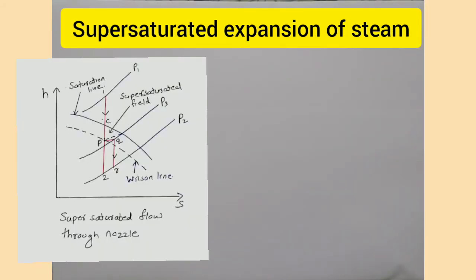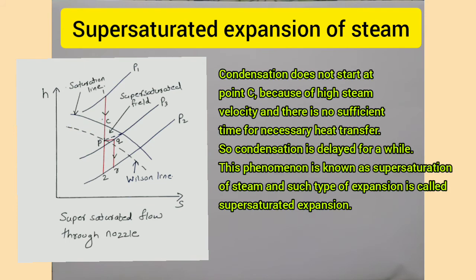Next is supersaturation. Consider isentropic expansion of a superheated steam in a convergent-divergent nozzle from state 1 at pressure p1 to state 2 at pressure p2. The change of phase should start at point c, where the expansion line meets the saturation line. But condensation does not occur at point c because of the high velocity of steam and there is not sufficient time for the necessary heat transfer and formation of liquid droplets. So the condensation of vapour is delayed for a while. This phenomenon is known as supersaturation of steam. The vapour continues to expand in a dry condition even beyond point c, and such an expansion is called supersaturated expansion.